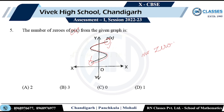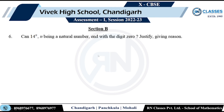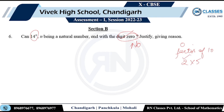Can 14 raised to the power n, where n is a natural number, end with a zero? The answer is no. For a number to end with zero, there must be a factor of 10, which requires both 2 and 5 as factors. In the prime factorization of 14ⁿ, the factor 5 is absent. Since 5 is absent, 10 is absent, and therefore zero cannot appear at the end.